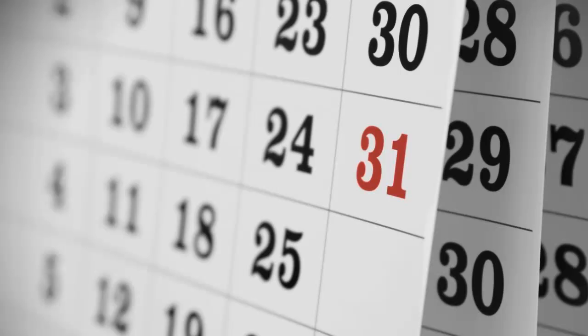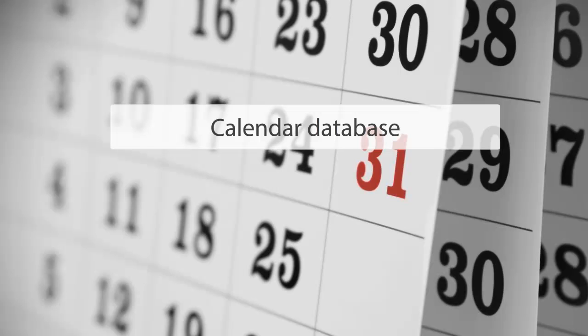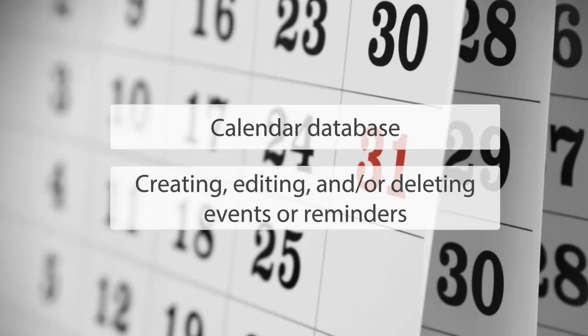The calendar app in iOS is the default way to find appointments and events. Let's say that you have created an application that allows you to add an event to a user's calendar. For this, you need to access the calendar database of a user to interface with their events and reminders. This will include creating, editing, and/or deleting events or reminders. The first step in implementing such a feature in your application involves asking the user to authorize your application to access their phone's calendar database.